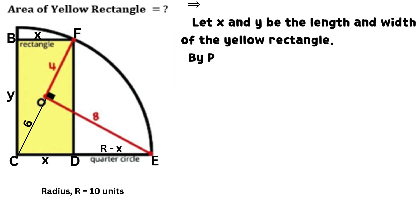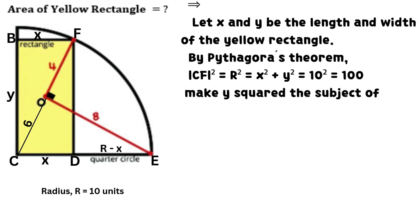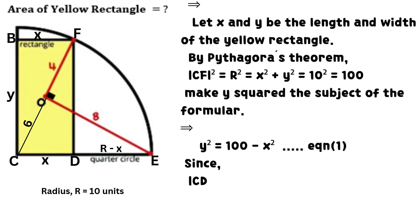Let X and Y be the length and width of the yellow rectangle. By Pythagoras theorem, the square of line CF equals the square of R, which equals the sum of the square of X and the square of Y. The result equals 100. Make the square of Y the subject of the formula. It follows that the square of Y equals 100 minus the square of X. We call it equation 1.